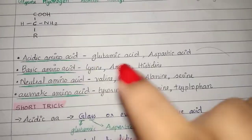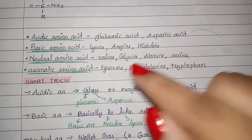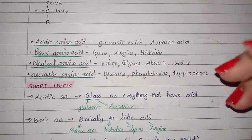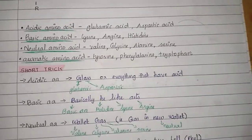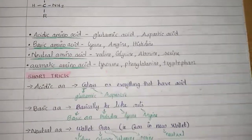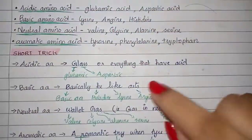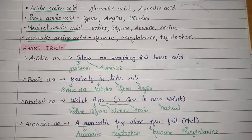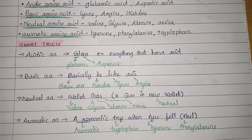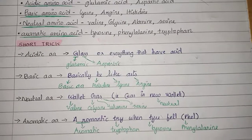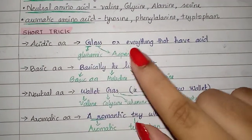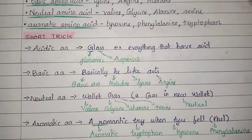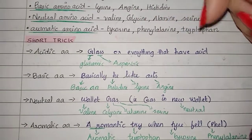The next trick is for acidic amino acid, basic amino acid, neutral amino acid, and aromatic amino acid — four types. For acidic amino acid, the trick is 'glass.' Acid comes in a glass — GL for glutamic acid and AS for aspartic acid.